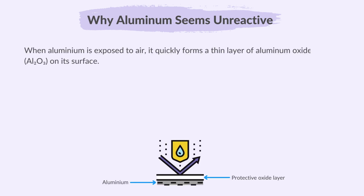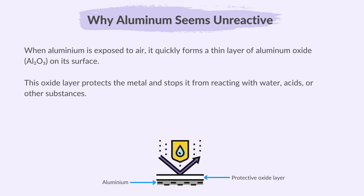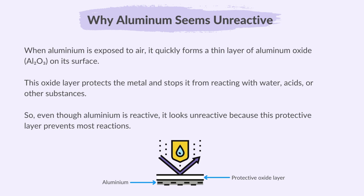Lastly, let's discuss why aluminium seems unreactive. When aluminium is exposed to air, it quickly forms a thin layer of aluminium oxide on its surface. This oxide layer protects the metal and stops it from reacting with water, acids or other substances. So, even though aluminium is reactive, it looks unreactive because this protective layer prevents most reactions.